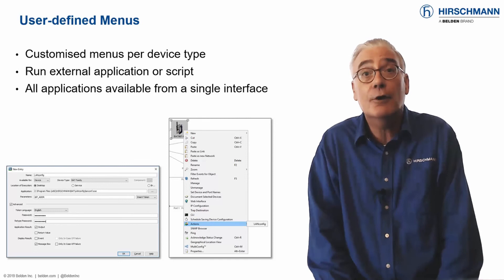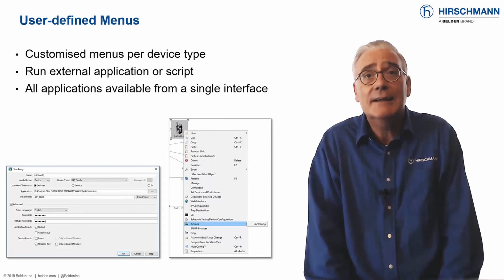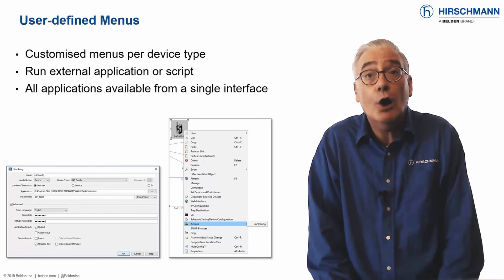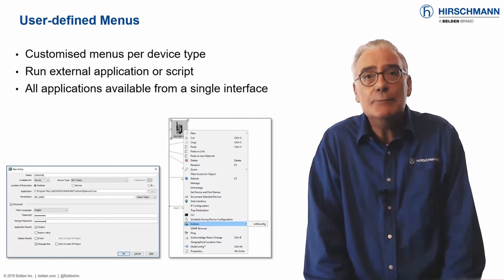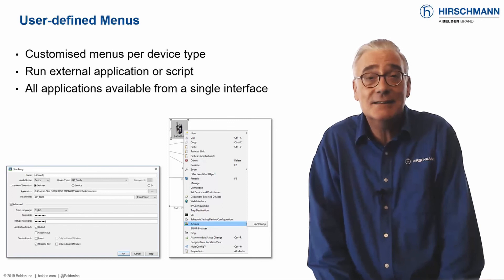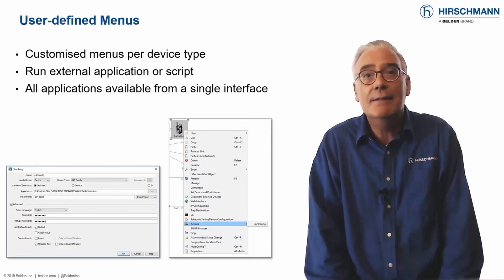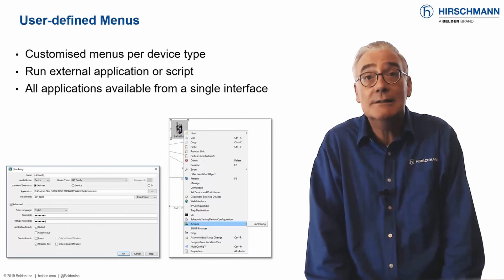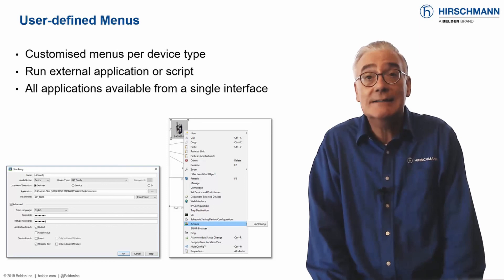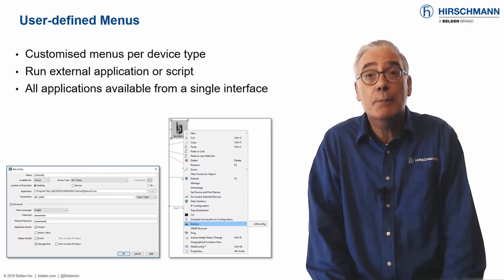Industrial HiVision includes the option to start other device-related interfaces directly from within the graphical user interface. For example, right-clicking a switch's icon will allow you to open the device's web interface, or a command line like Telnet or SSH. You can also design your own device menus and run any applications you would like. Wildcards are available for parameters such as IP addresses, and it's even possible to include passwords in the command line. For example, if you use VNC for remote access to PCs, create a VNC menu and associate it with PC devices. Enjoy the convenience of customized device access directly from inside Industrial HiVision.